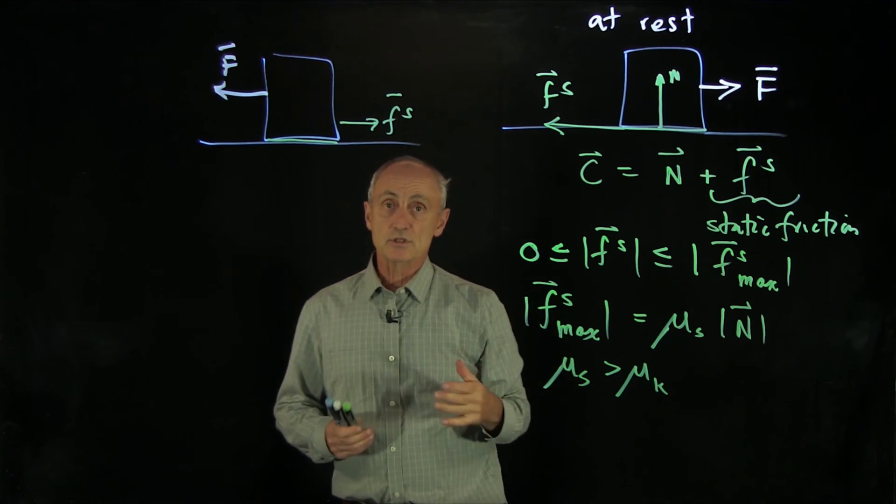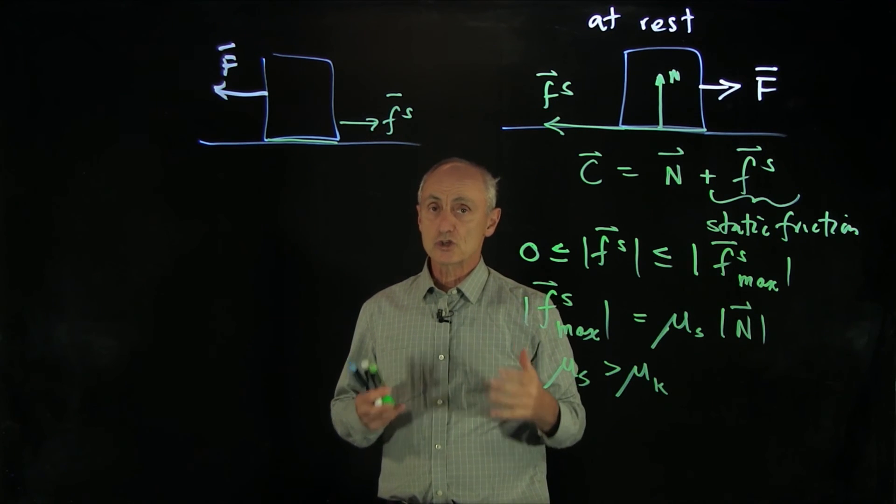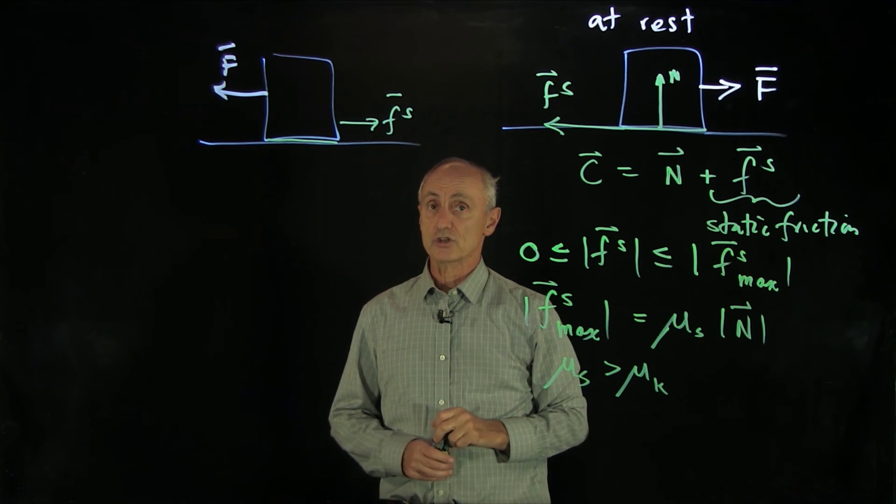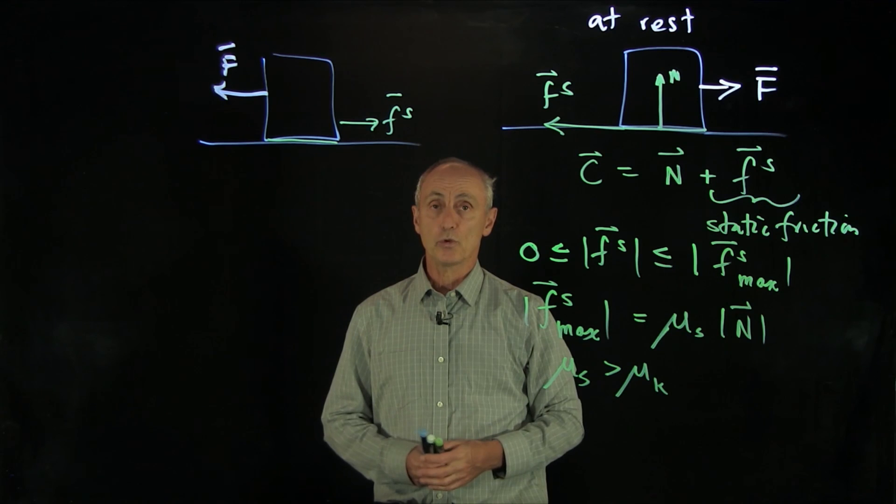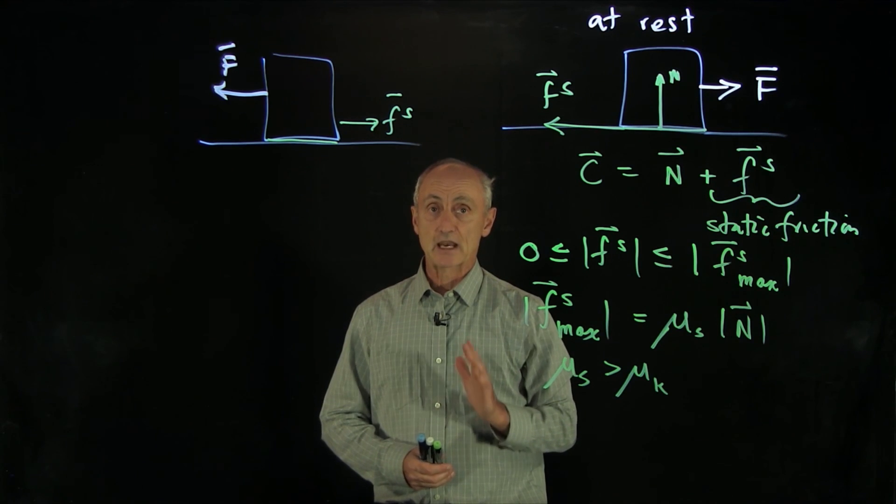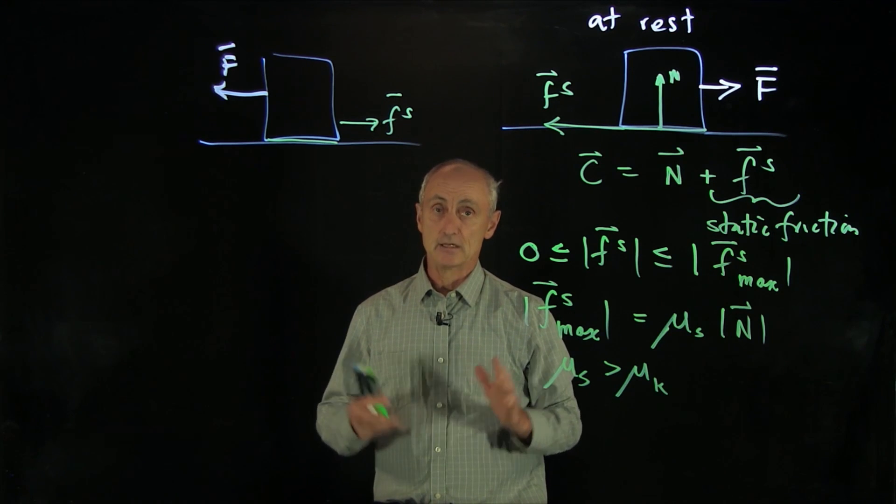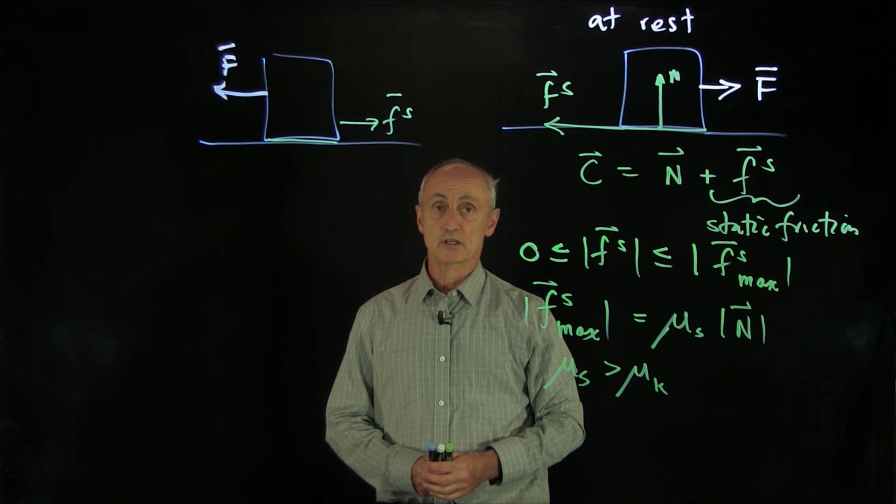But there may be many systems in which we're actually not quite sure which way static friction points. And as the course develops and we look at more complicated examples, we'll see that the direction of static friction can depend on all the other constraints on the system.